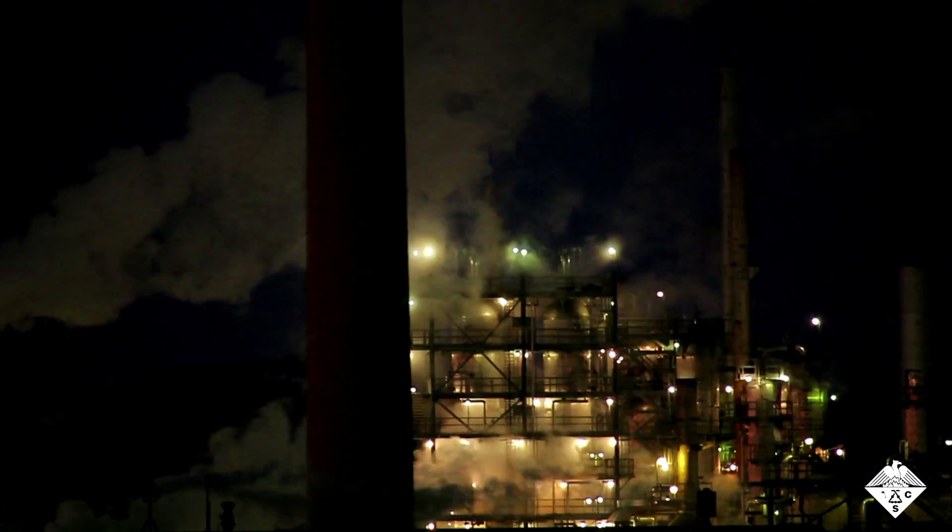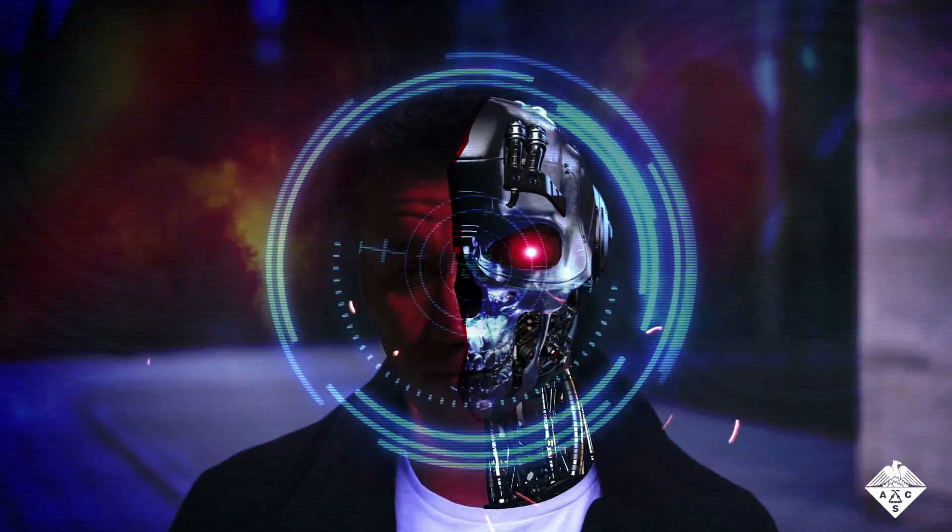In the blockbuster Terminator movie franchise, an evil robot can morph into different human forms and objects or ooze through narrow openings thanks to its liquid metal composition. Although current robots have nowhere near these capabilities, the technology is getting closer.